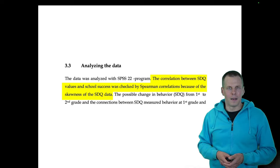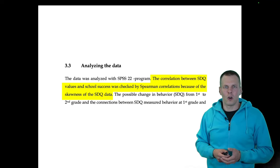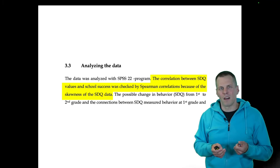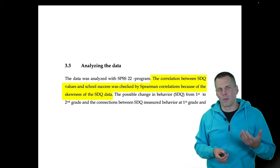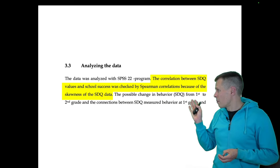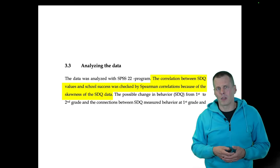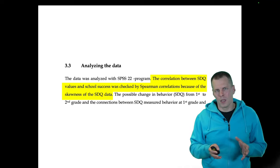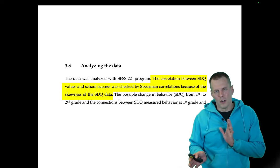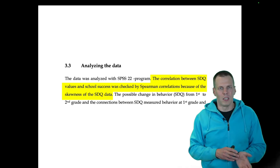Then there is the issue of rank correlation. Often students say that because their data are non-normal, they cannot apply linear correlation but must apply rank correlation. This is also incorrect, because the correlation you pick should depend on the kind of relationship you want to model, not on how the data are distributed individually.